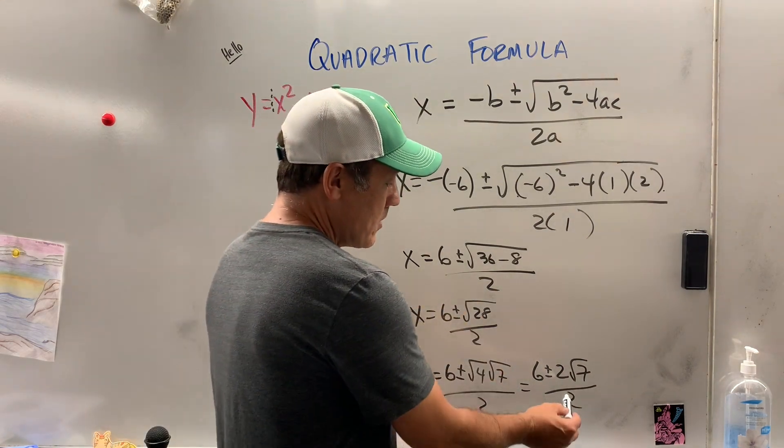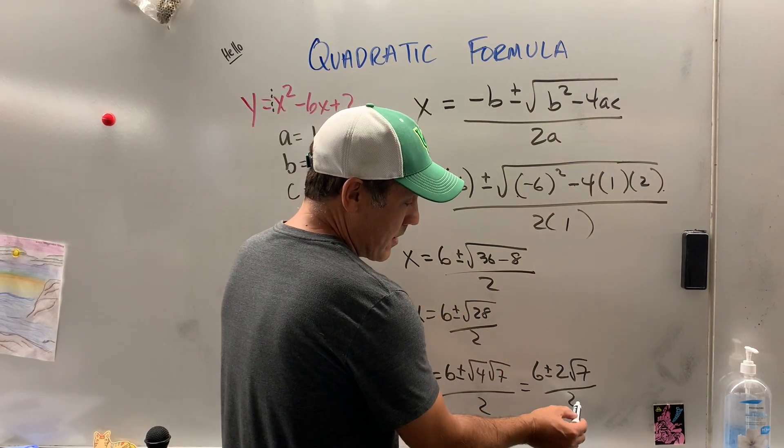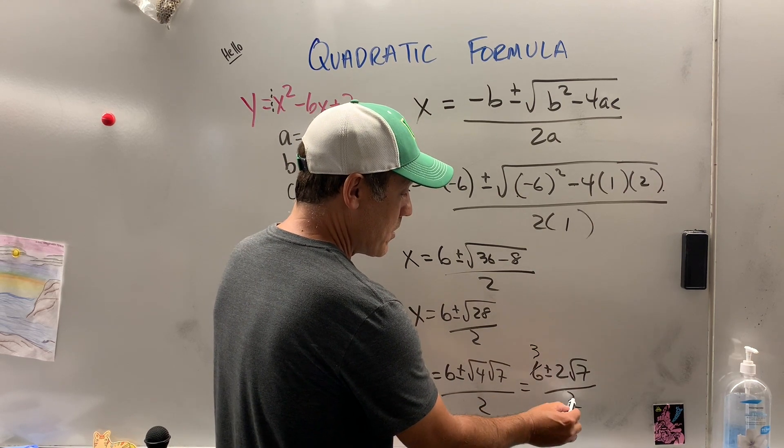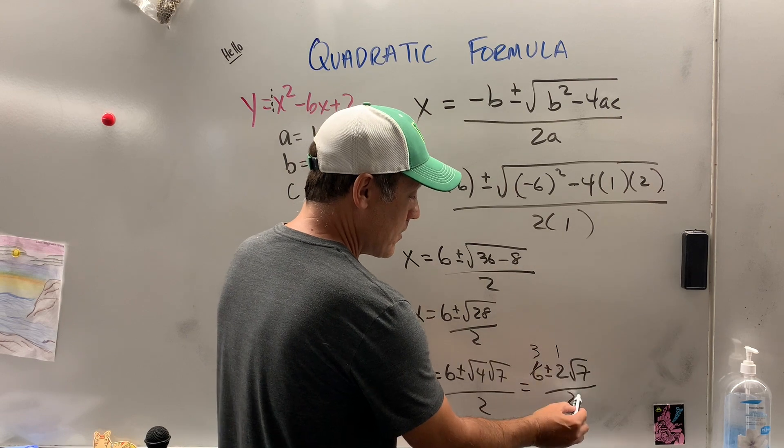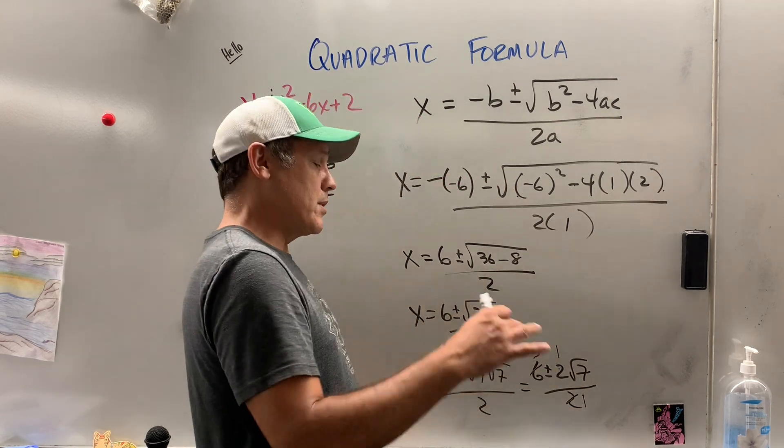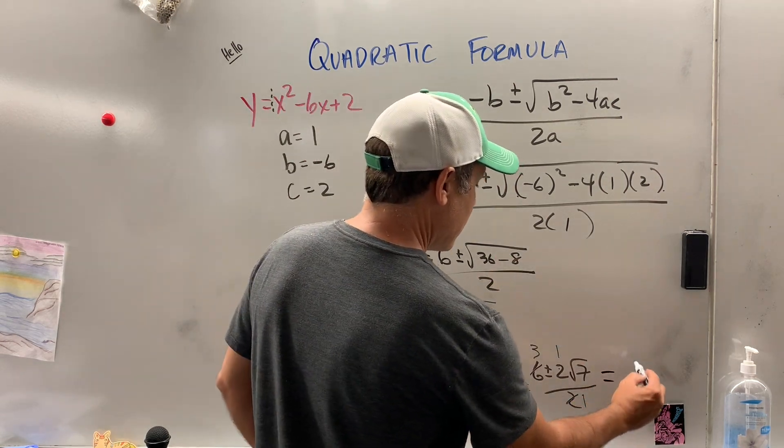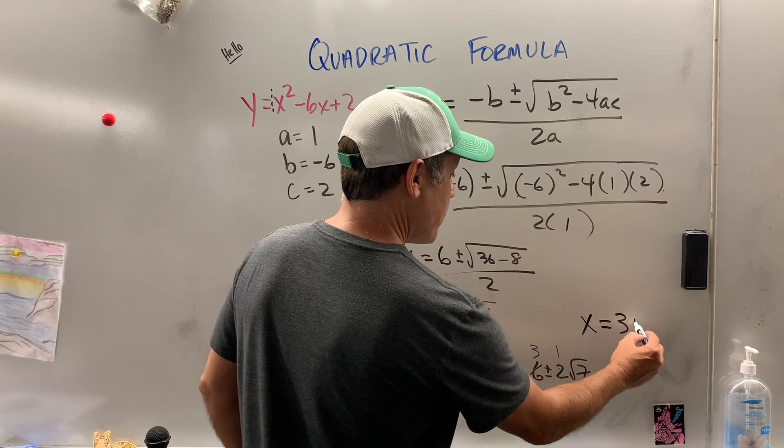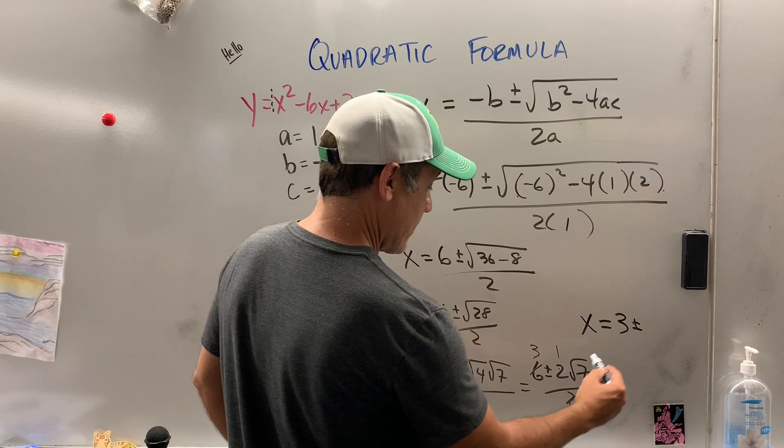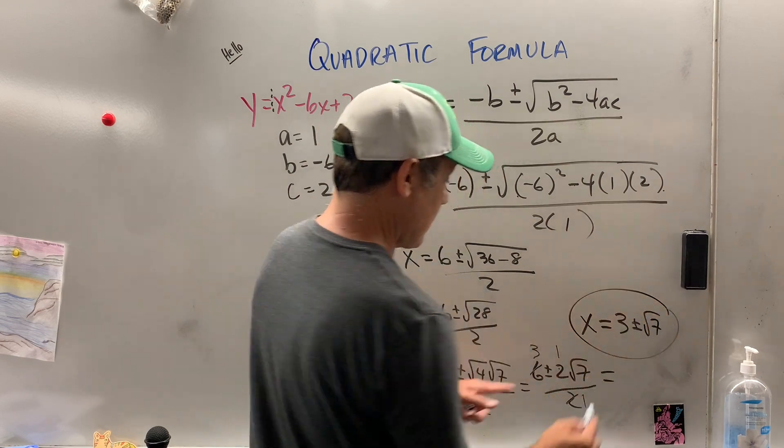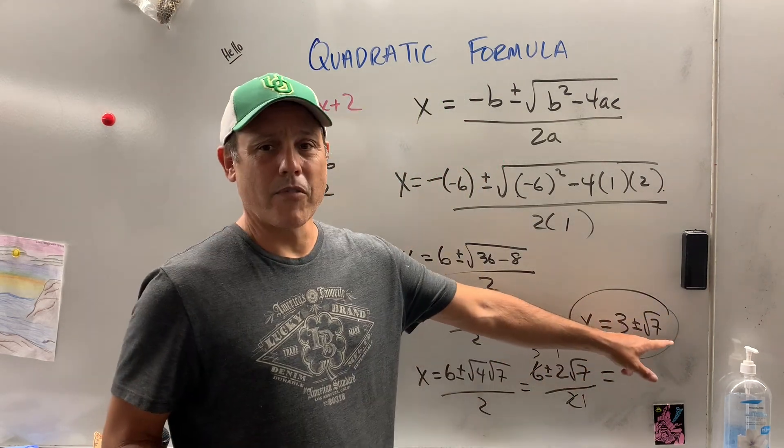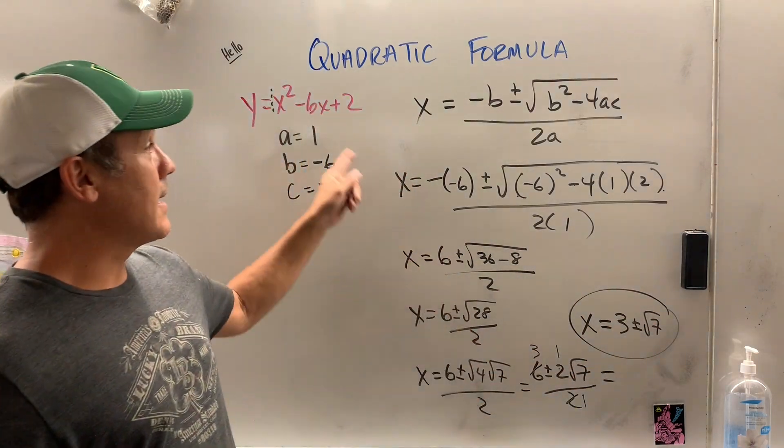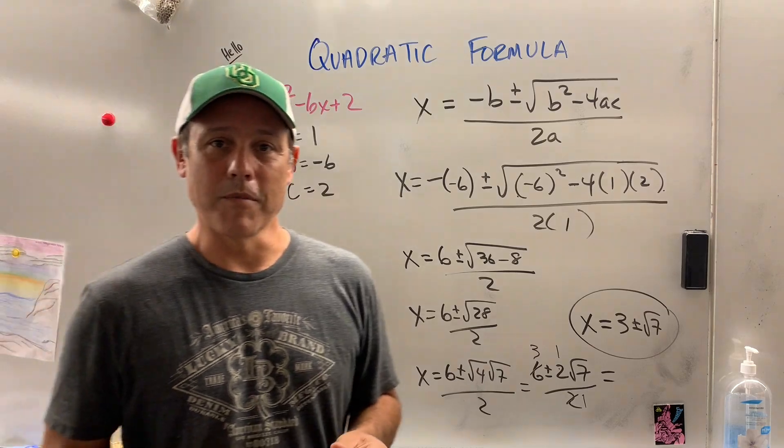But now check this out. There's three terms here. 2 goes into 6 three times. 2 goes into 2 once, and 2 goes into 2 once. I just pulled the 2 out of everything. So my final answer, let's be professional. x equals 3 plus or minus square root of 7. See, there's a 1 there, a 1 there. You could put it over a 1, but nobody does. At any rate, that is how you use the quadratic formula.